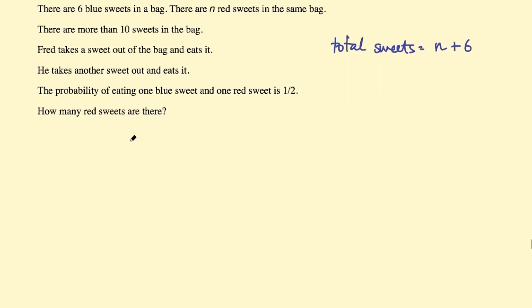And then you can say the probability of eating a blue sweet first will be 6 out of the total which is n plus 6, and the probability of eating a red sweet second will be n because we still have n red sweets but now we only have five blue sweets so the total of the sweets will be n plus 5, and we can multiply them together to find the probability of getting those two things.